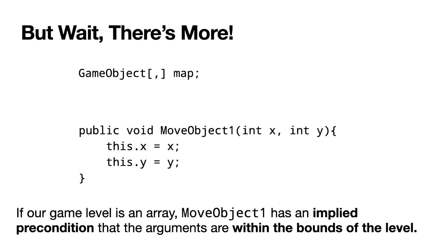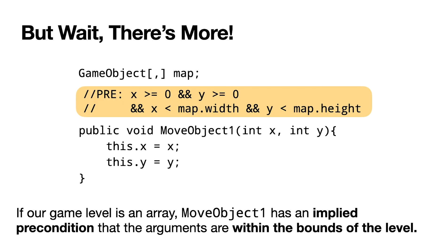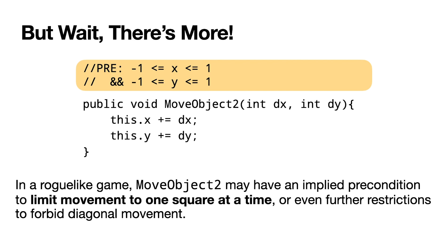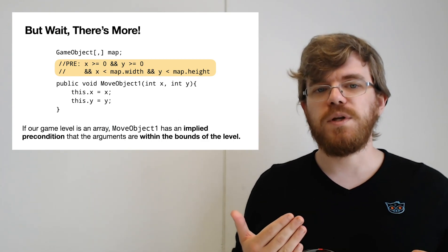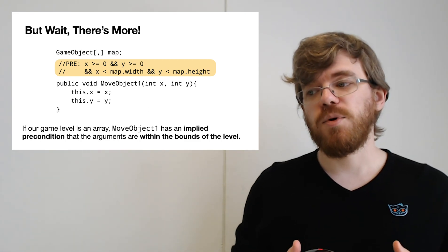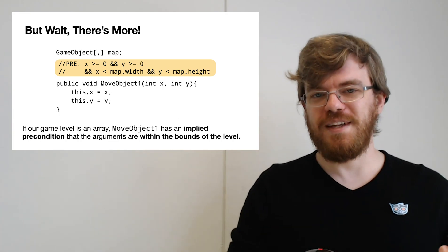It actually gets even worse. If we go back to our first move object example, suppose the level is defined as an array of objects and the player moves around this array — there's actually an implied precondition on this method: the coordinates you give must be within the bounds of the level, otherwise that would cause an array index exception. There's also a precondition on the other method: we might want to only allow the player to move one square at a time, so bounds are set on the arguments — it can't be less than minus one and it can't be more than one. Especially if you're a solo developer, these are often things we don't make explicit in our code, even though there are ways to do so.